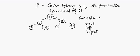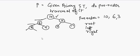In our example, we first traverse the root, which is 10, then the left subtree, which is 6, then the left subtree of 6, which is 3. Node 3 has no left subtree and no right subtree, so we go back and traverse the right subtree of 6, which is 9. Node 9 has no left and no right subtree, so we go back to 10 and traverse its right subtree.